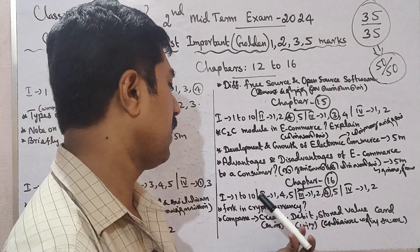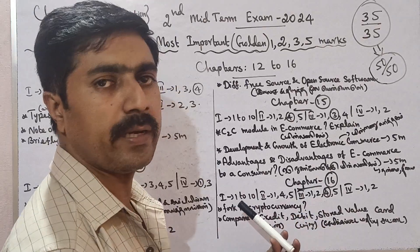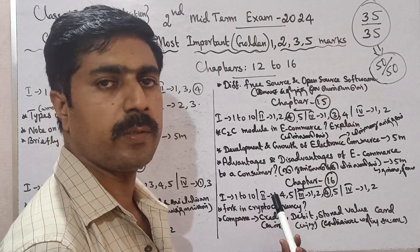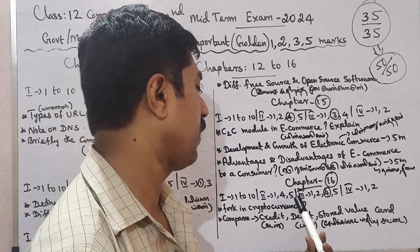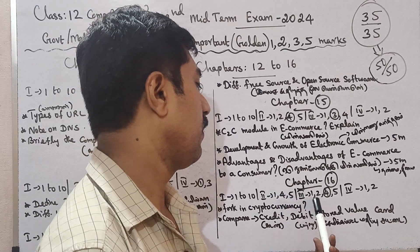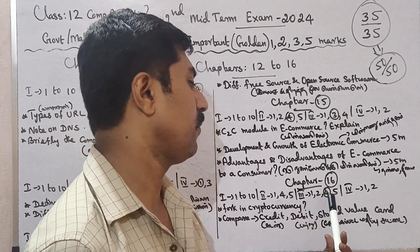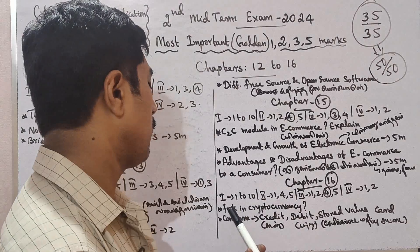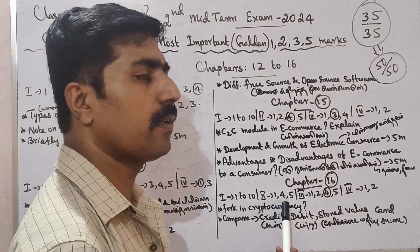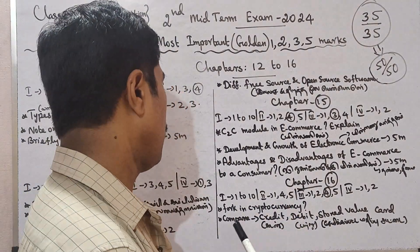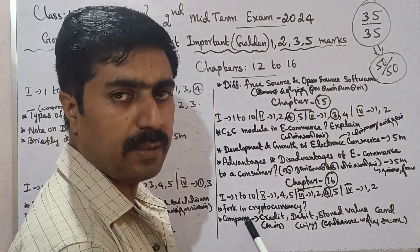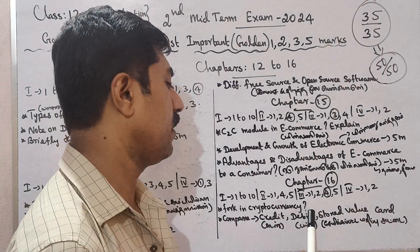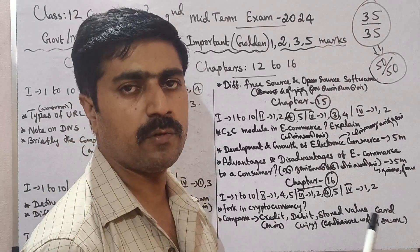In Chapter 16, the mark allocations are: 1 mark questions 1 to 10, 2 mark questions 1 to 5, 3 mark questions 1 to 5, and 4 mark questions 1 and 2. Inside, the key topic is cryptocurrency. Compare credit card, debit card, and store-to-value card.